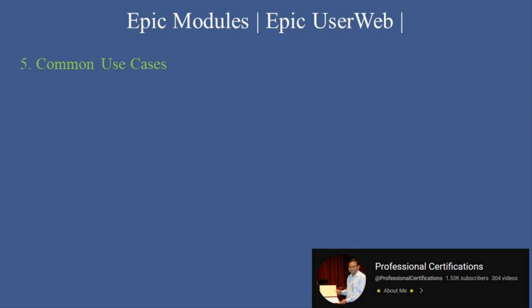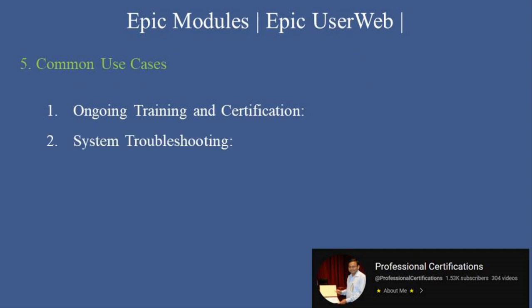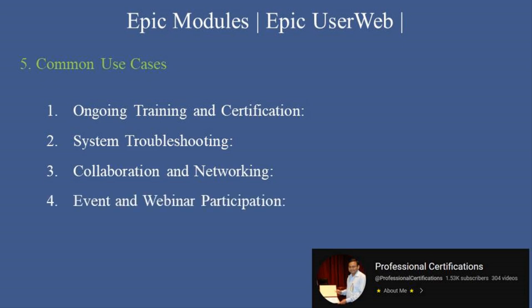Common Use Cases: Epic UserWeb is ideal for ongoing training and certification, helping users maintain certifications and stay informed about new Epic features. It supports system troubleshooting by offering tools and guides to resolve technical issues efficiently. It enables collaboration and networking by connecting users across organizations to share insights and advice, and supports event and webinar participation to keep users updated on the latest Epic advancements and best practices.